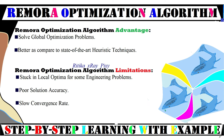We can use this algorithm to solve global optimization problems, and it provides better results compared to state-of-the-art heuristic techniques. However, there are certain limitations: for example, a slow convergence rate, and sometimes this algorithm gets stuck in local optima for some engineering design problems, also providing poor solutions that are not accurate.